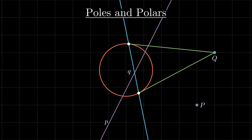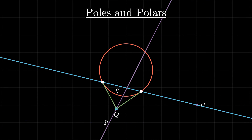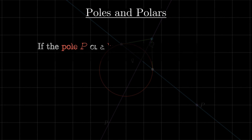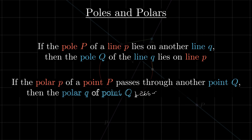In general, the polar line of a given point P is a line whose closest point to the circle center is the inverse of P, and the pole of a given line Q is the inverse of the point on the line closest to the circle center. What makes them more interesting in the context of the Apollonius problem is: if the pole of a line lies on another line, then the pole of the second line lies on the first. Also, if the polar of a given point passes through another point, then the polar of the second point passes through the first. Both properties are easy consequences of the fact that the inverse of a circle passing through the center of inversion is a straight line.